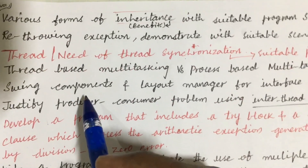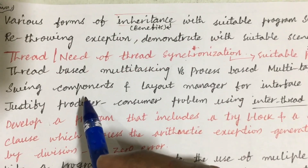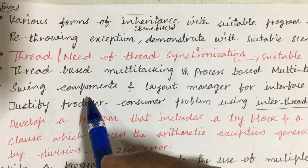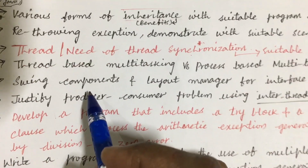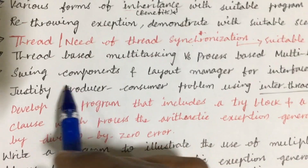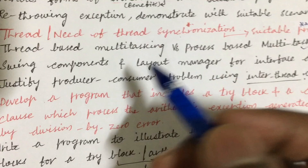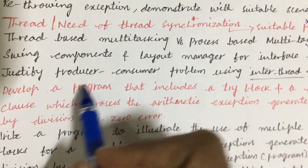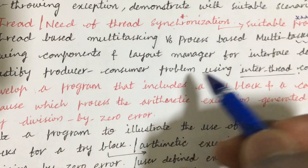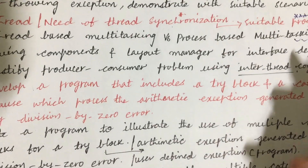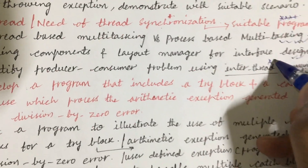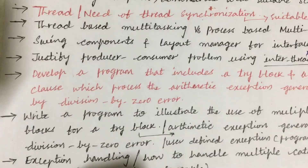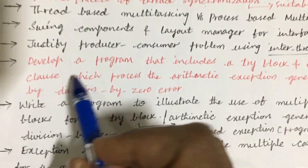As per the COVID exam pattern, you are aware that eight questions will be asked of which you answer any five, and the first three units cover six questions. Swing components and layout manager for interface design. Producer-consumer problem using inter-thread communication — this is also a very important question.